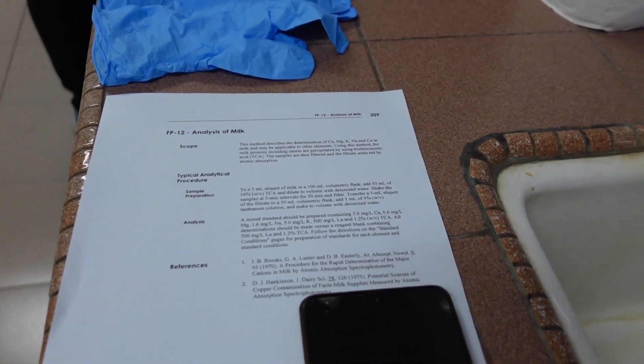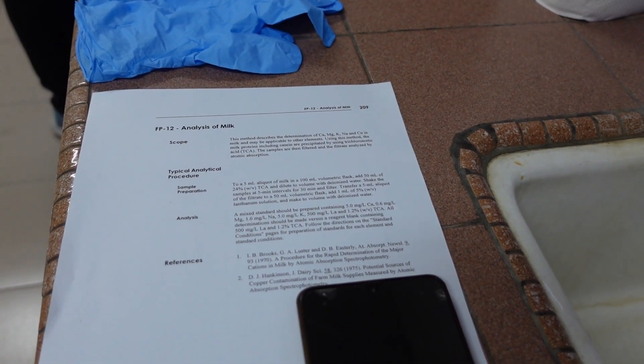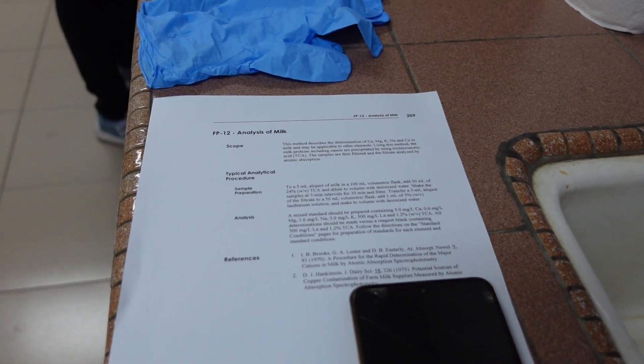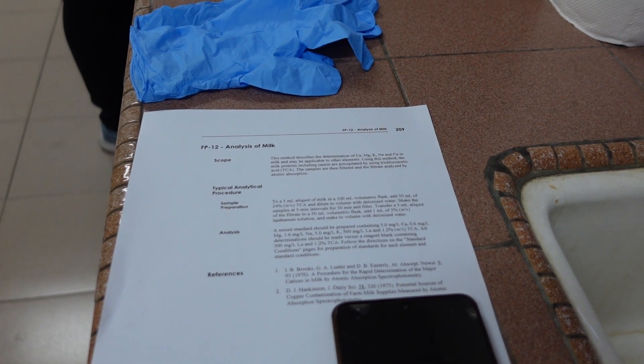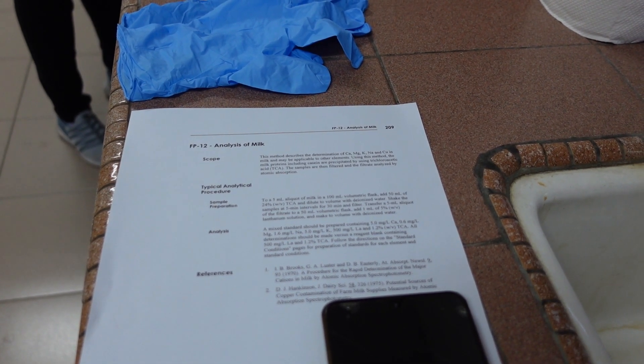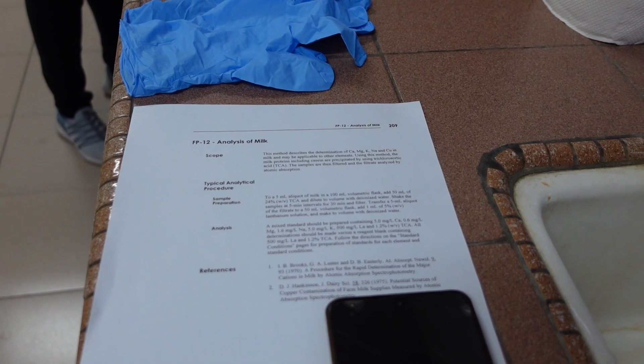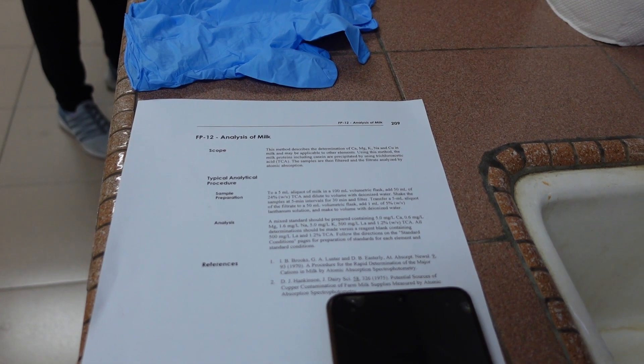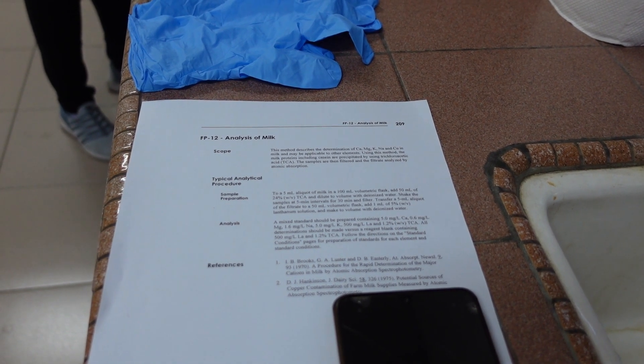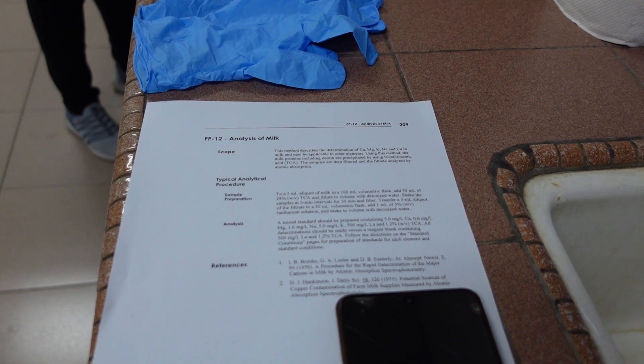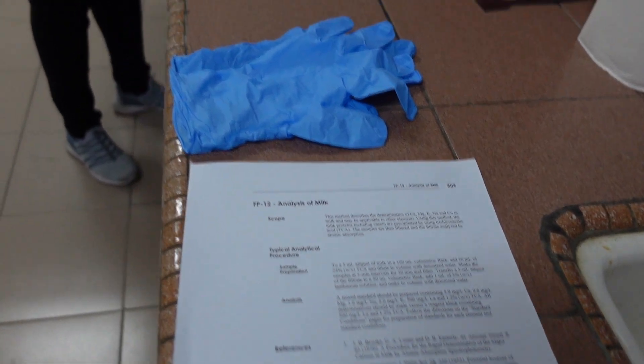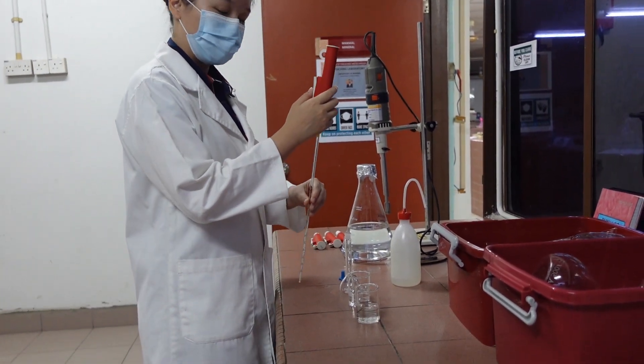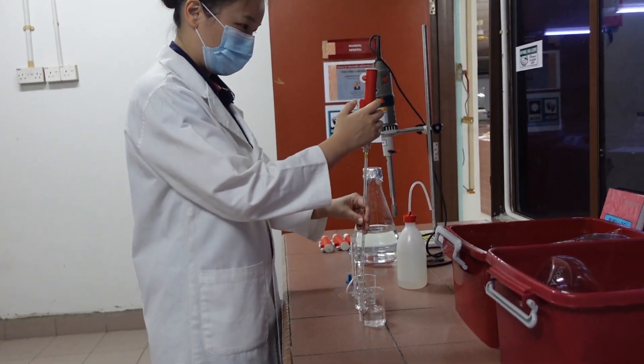Step number one is sample prep. To run AAS, what you need to do first is prepare the standard. You need to prepare the standard of a known concentration. In our case today, we are going to do a calcium standard. We're going to prepare a series of different concentrations of calcium.